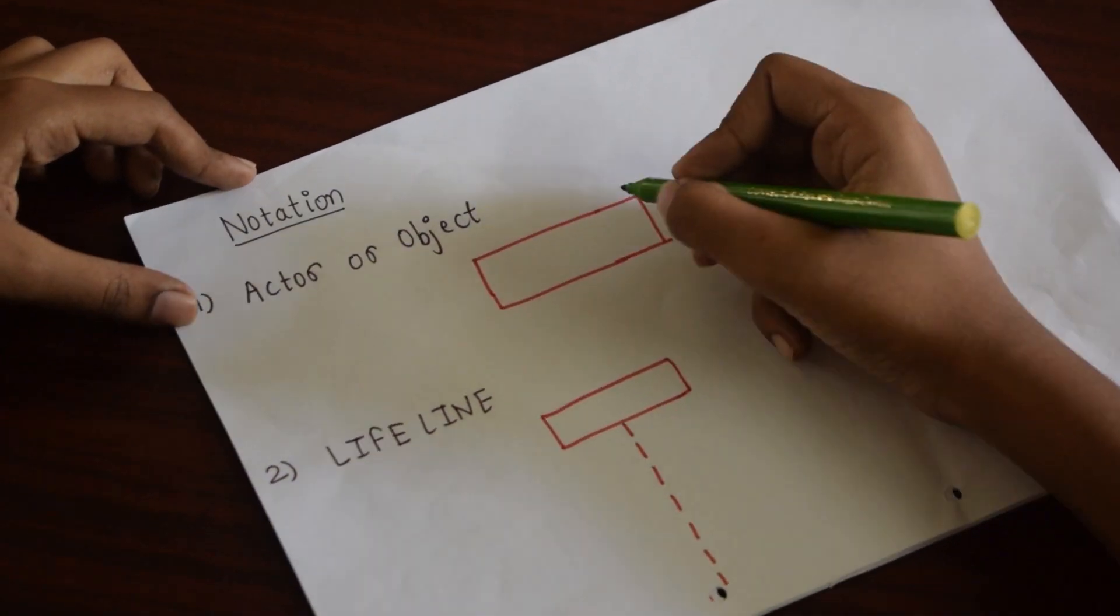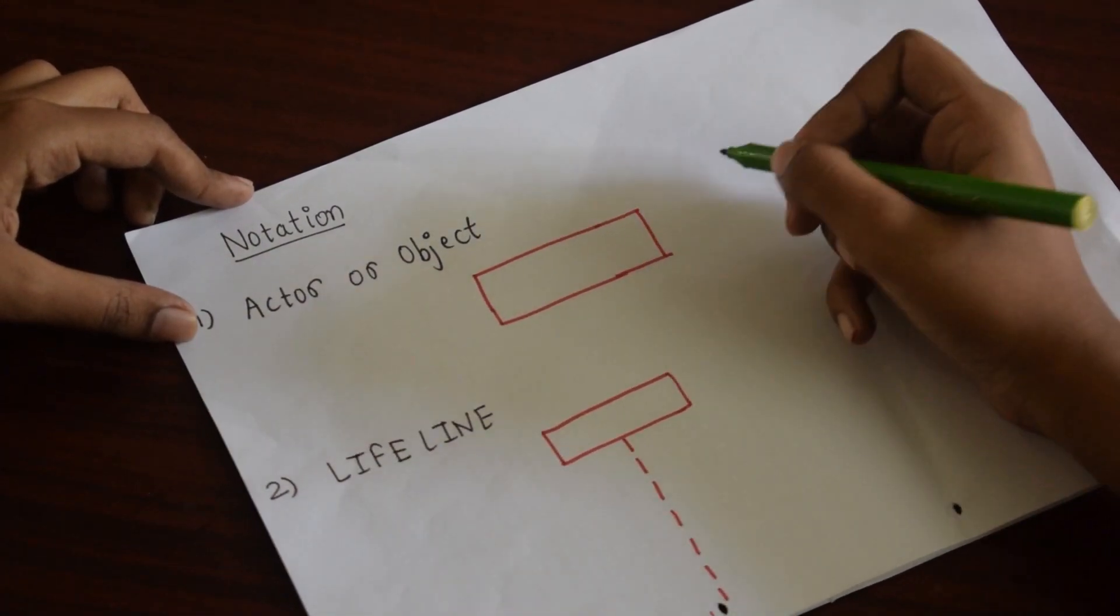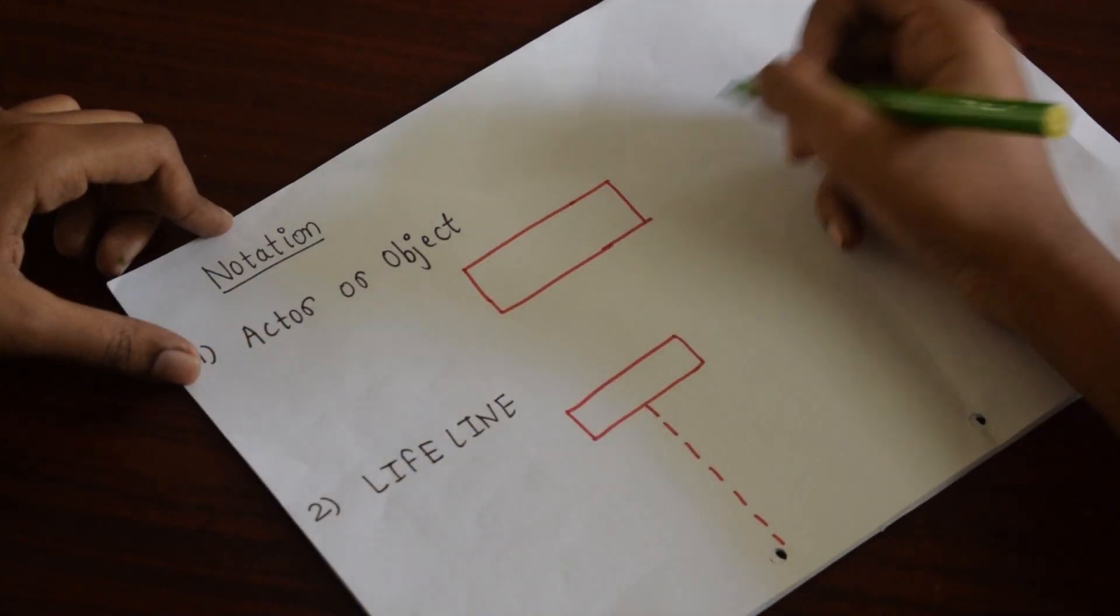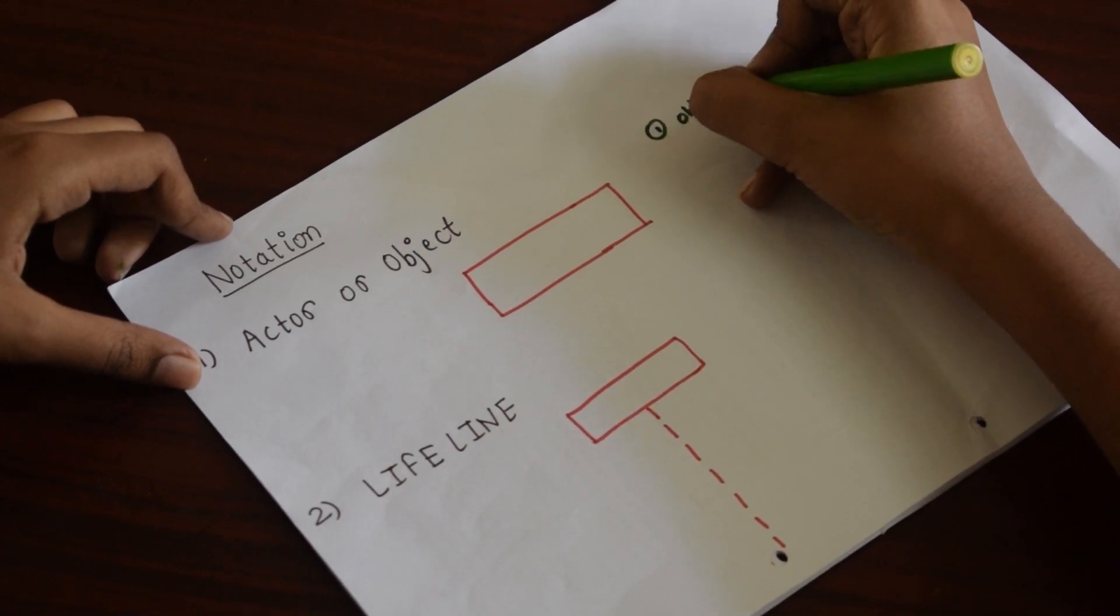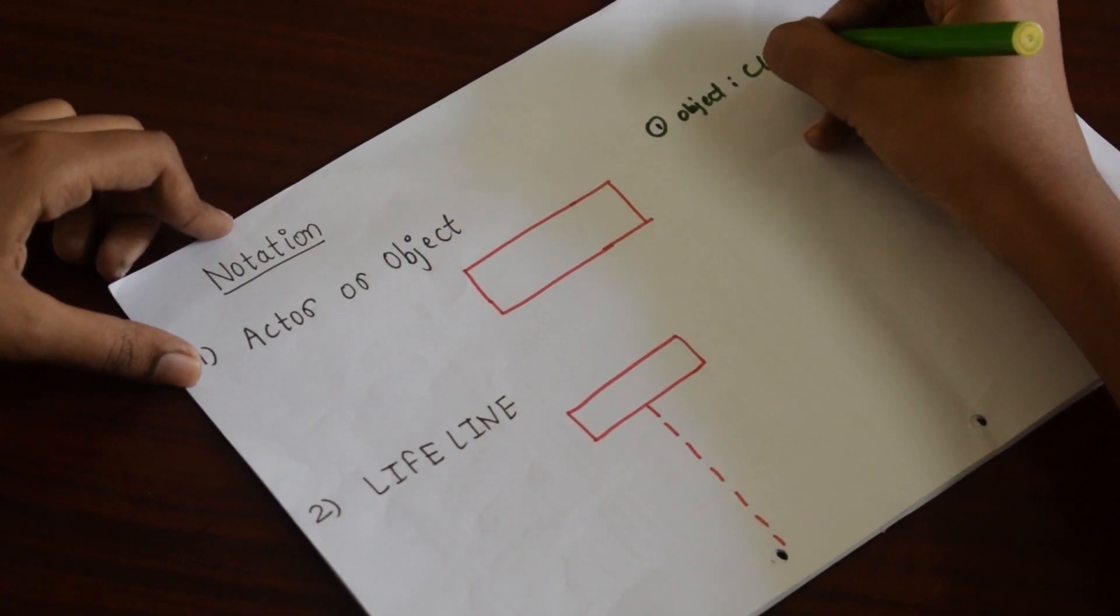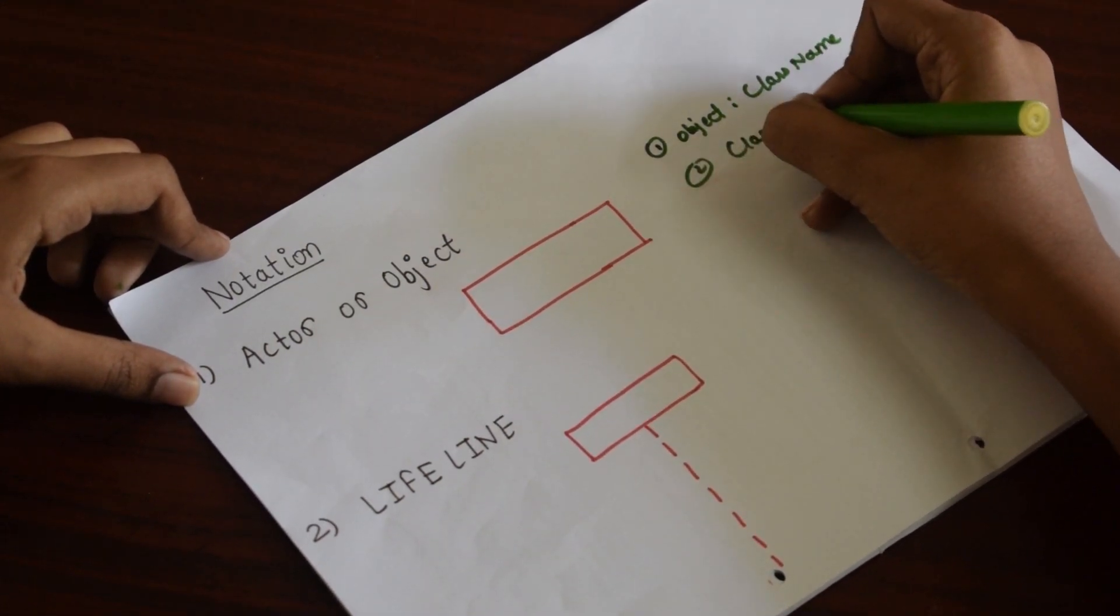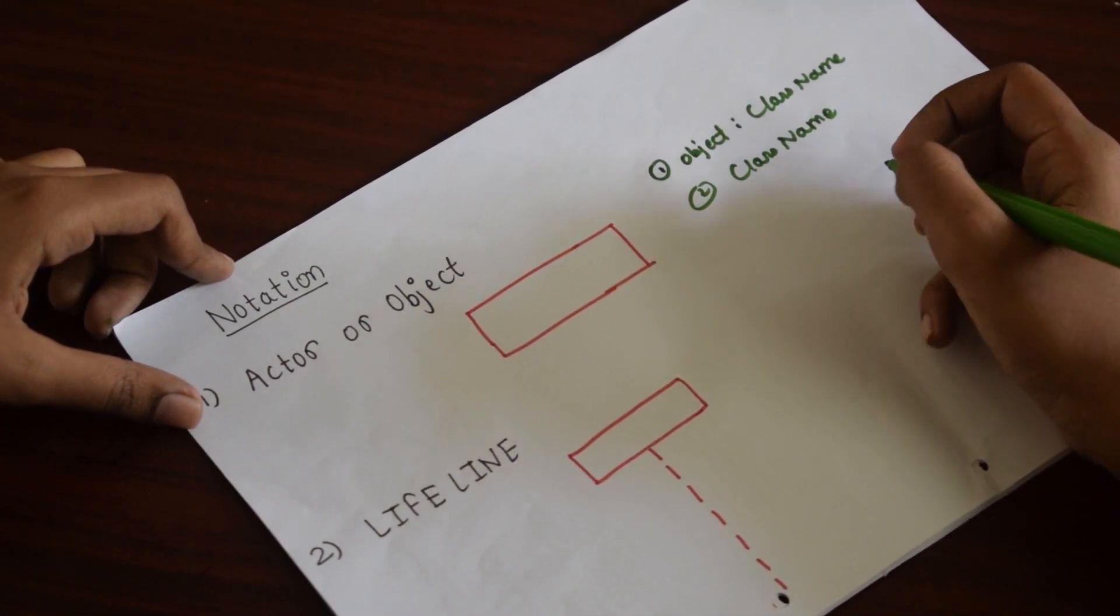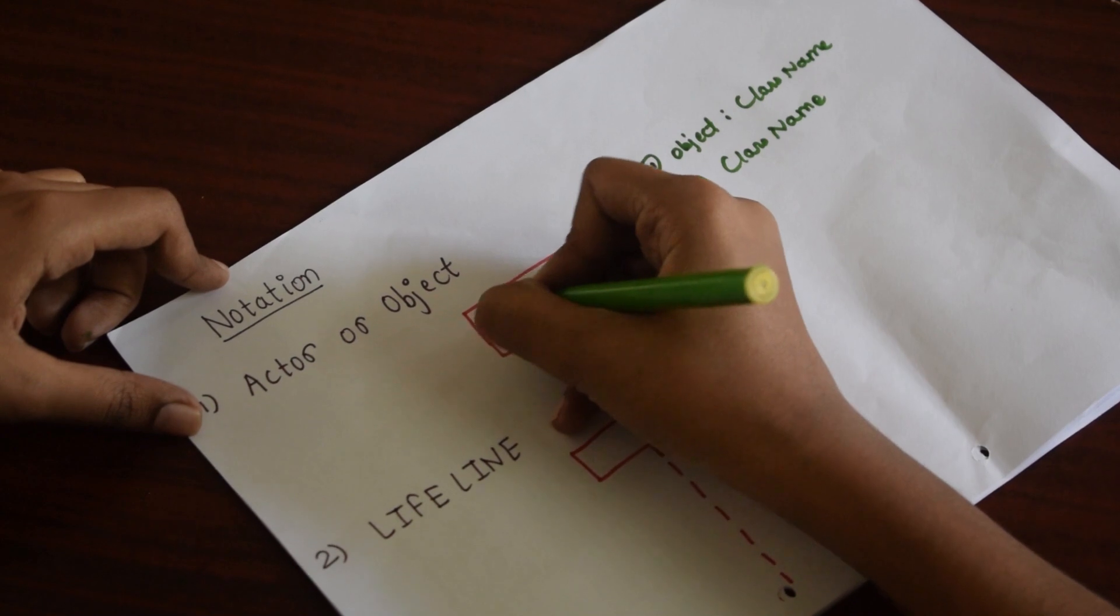First notation is actor or object. We have an entity who is already in use. An object can be represented in two ways. First, object and then class name, or directly by class name. But in both cases, class name is underlined. For example, class name student is underlined.